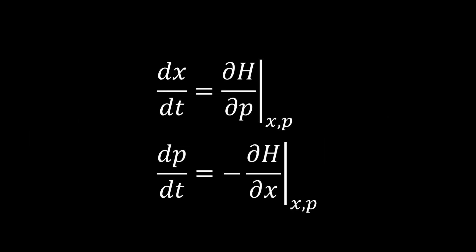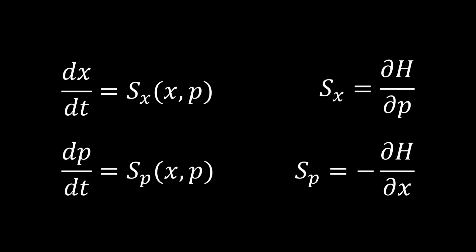The first thing we have to look at is the math. These are the Hamilton equations for one degree of freedom: the derivative of x in t is equal to the derivative of h in p, and the derivative of p in t is equal to minus the derivative of h in x. I find it easier to understand this if we break it up into two separate parts, because they're going to tell us two separate things. In the middle, we define sx and sp: sx is equal to the derivative of x in t, and sp is the derivative of p in t. On the other side, we have the relationship between sx and sp to h and their derivatives. So now we can concentrate on understanding what sx and sp are.